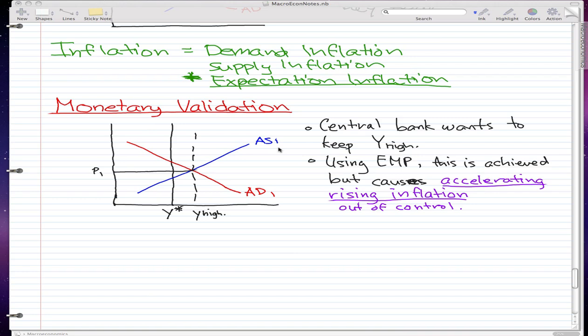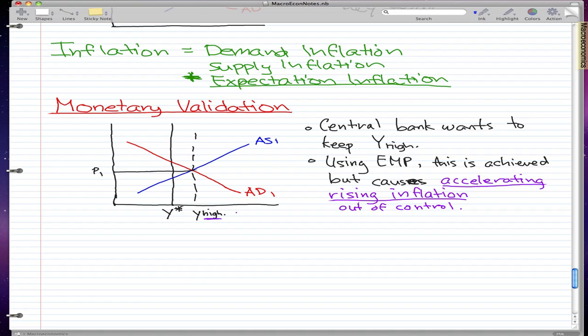Today we're going to go through monetary validation. This really never showed up on my test, so you might want to keep it on the edges of your mind. The scenario for today is that the central bank wants to keep Y at Y high, and using EMP or expansionary monetary policy this is achieved. But this causes accelerating rising inflation, which is where the inflation is out of control.